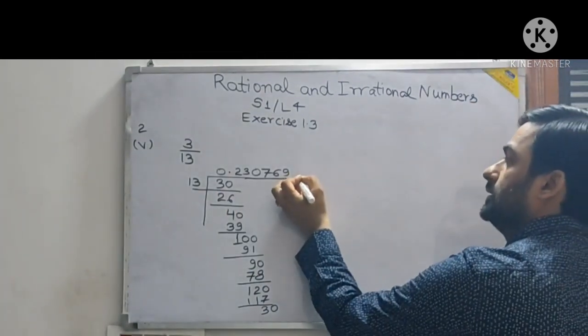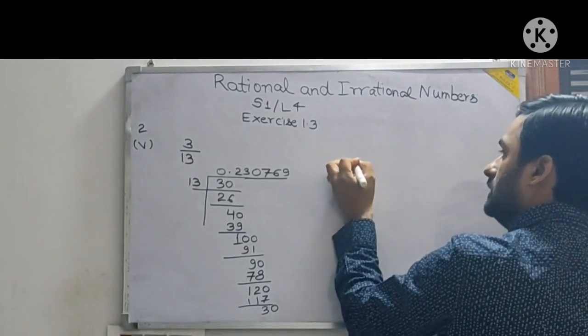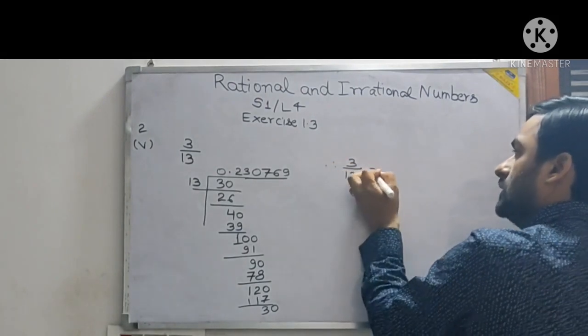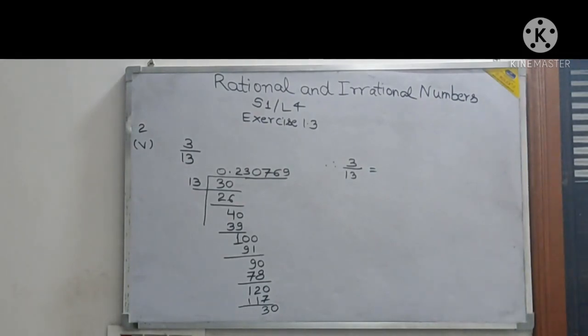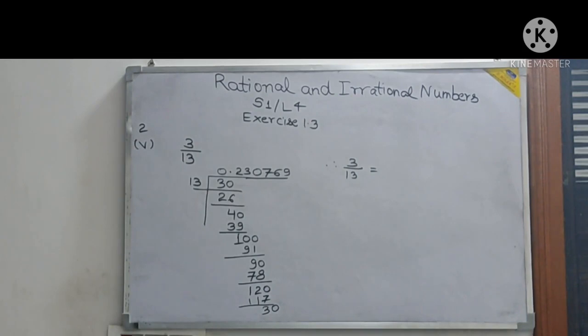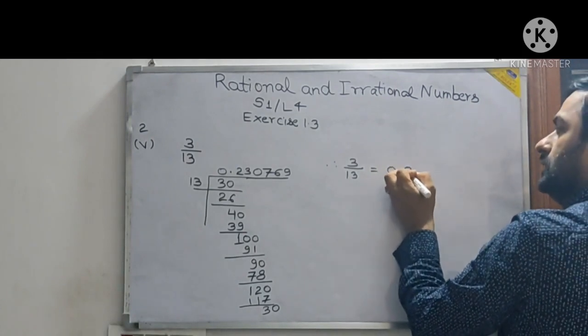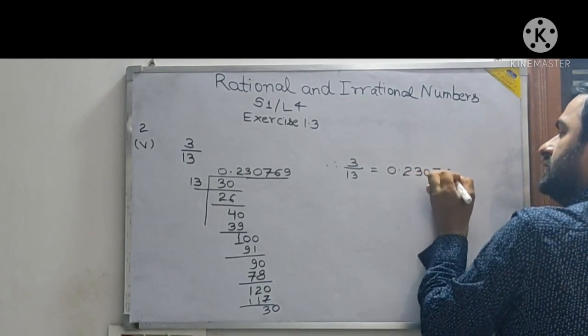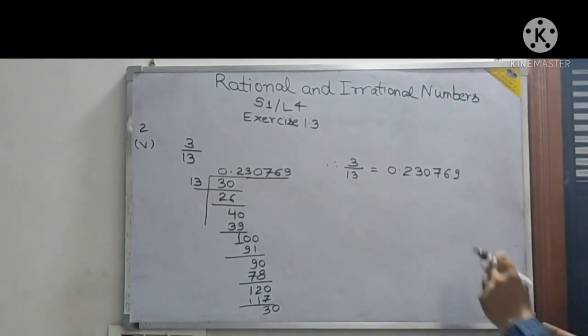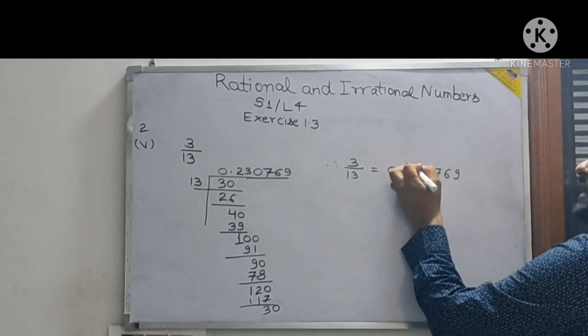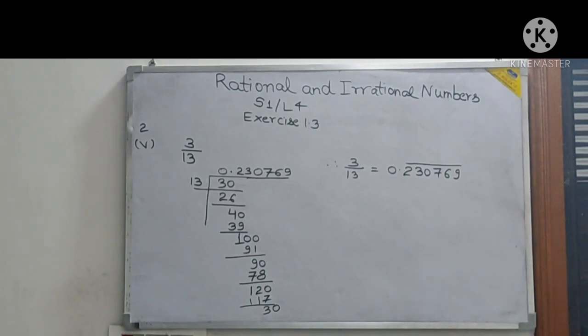You write here, therefore, 3 by 13 is equal to 0.230769 and you put a bar on that. So I'll write that it will be 0.230769 with a bar. And see here, the same pattern will repeat, so you can put a bar on this. That will be your answer for the decimal expansion part only.